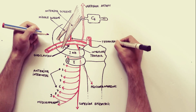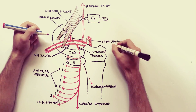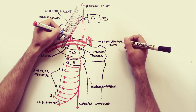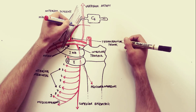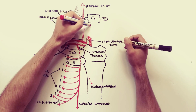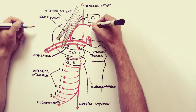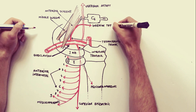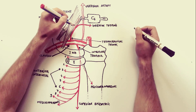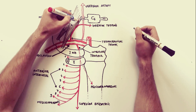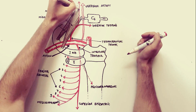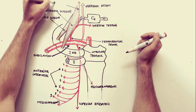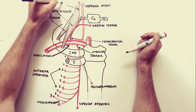The thyrocervical trunk arises from the upper aspect of the first part of the subclavian artery at the medial margin of the scalenus anterior muscle, and immediately terminates into three branches. The first is the inferior thyroid artery, which ascends along the medial border of the scalenus anterior, then turns medially in front of the vertebral artery to reach the posterior surface of the lateral lobe of the thyroid gland.